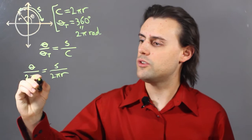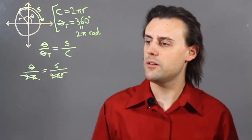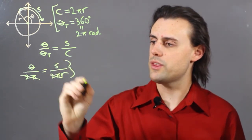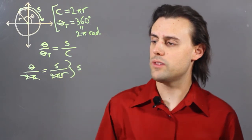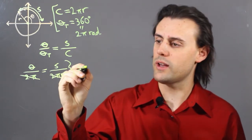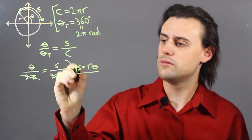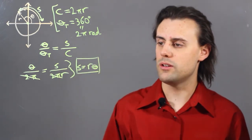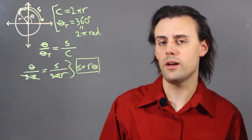So notice that the 2π's will cancel out, so I'm left with the length of the arc is equal to the radius times that angle, where that angle is being measured in radians.